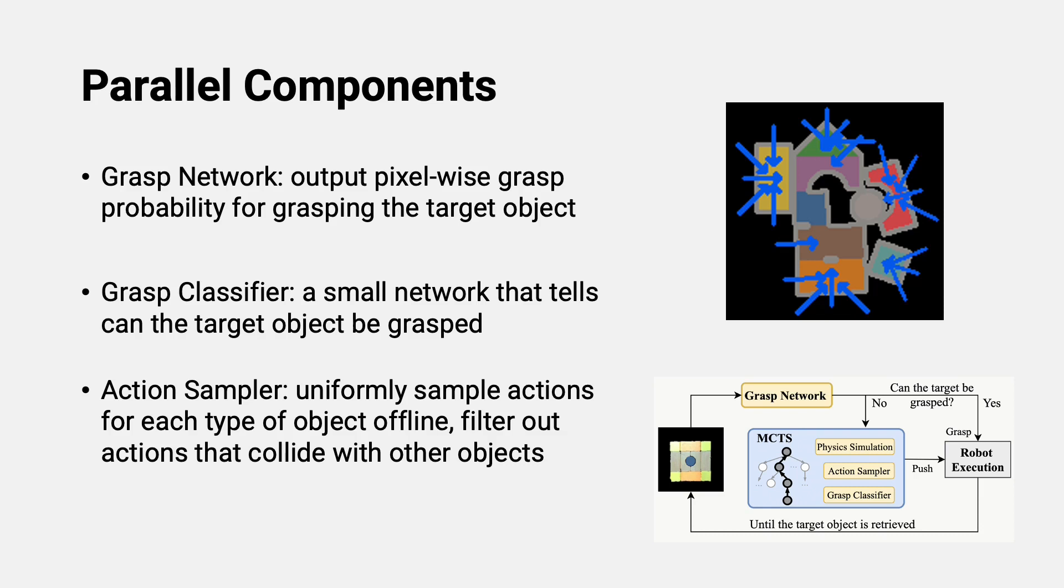Similarly, to generate actions for each state, we pre-sample push actions for each type of object and only do collision checking that filters out actions that collide with other objects. This trades optimality for speed.